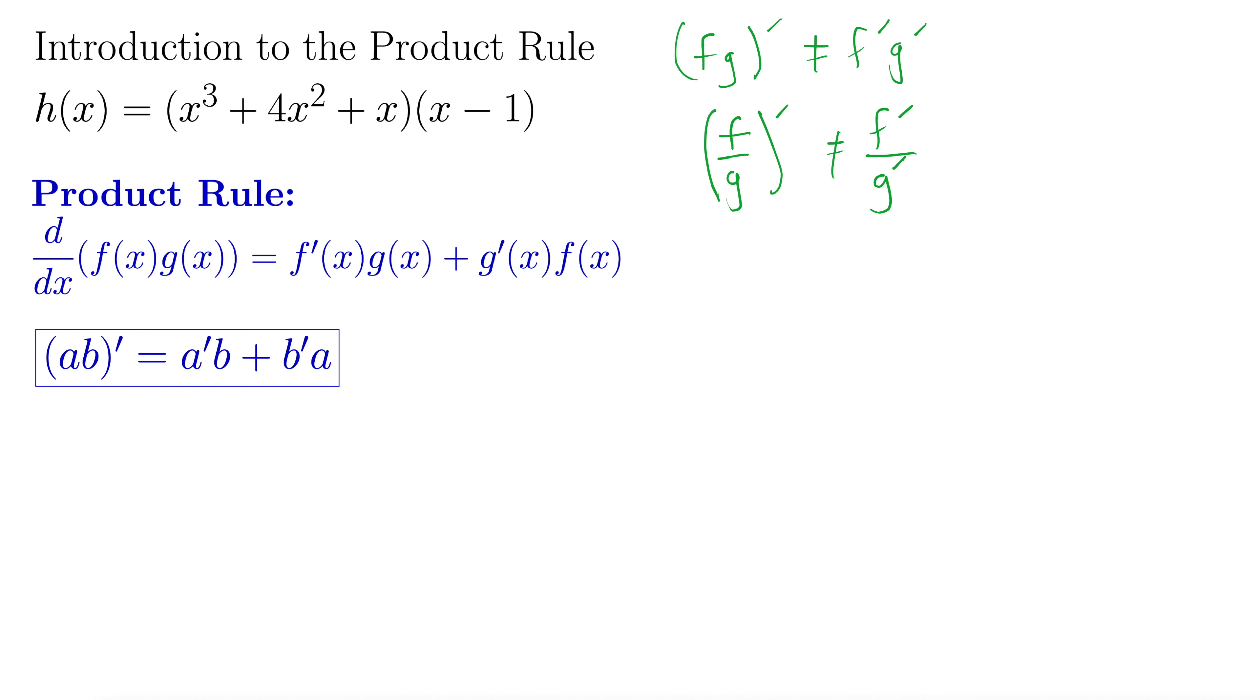So going back up top for our example here we have h(x) equals (x³ + 4x² + x). We're going to treat that as our a. And then (x - 1). We're going to treat that as our b.